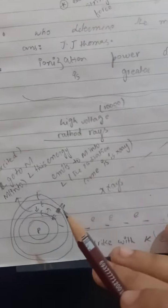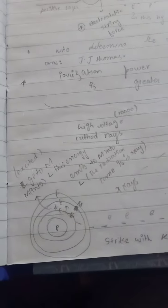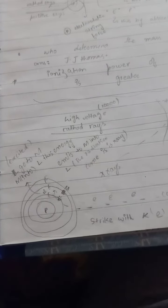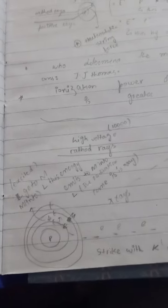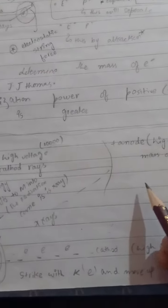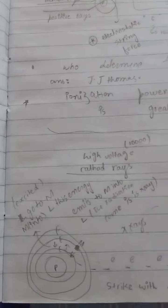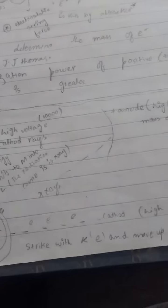The electron will be coming downward, so the production of X-rays will be done. This is the production of X-rays we have learned today—how X-rays are produced. This was the lecture we have done in chemistry class.